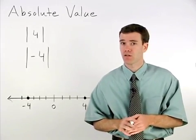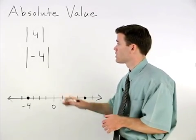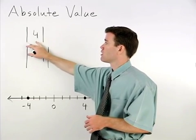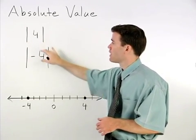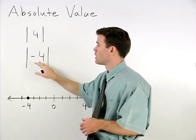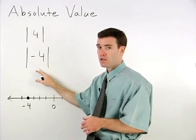To represent the absolute value of a number, we use a vertical bar on either side of the number. So here we have the absolute value of four and the absolute value of negative four.